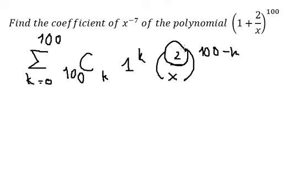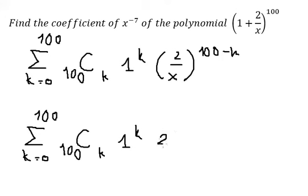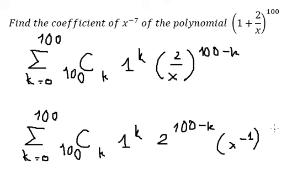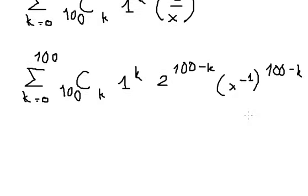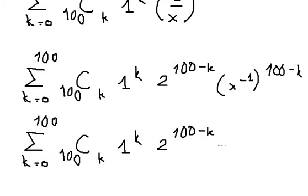We have the number two and s, so we can write this as two to the power of 100 minus k in the denominator. We have s to the power of negative one, raised to the power of 100 minus k, which gives us s to the power of k minus 100.